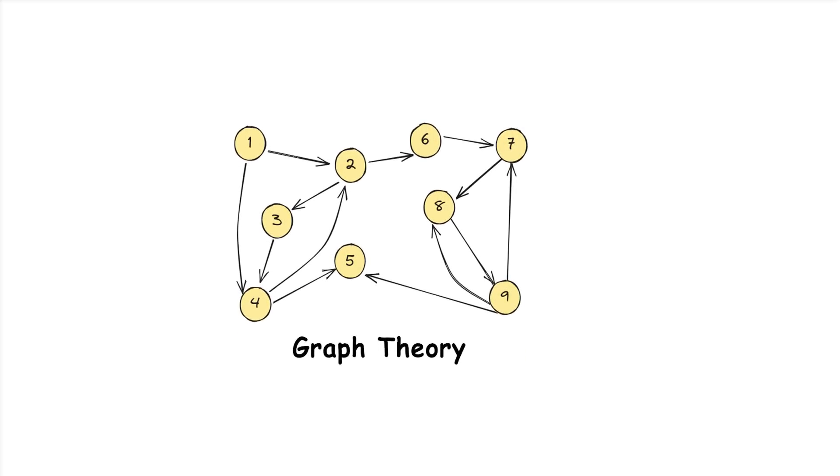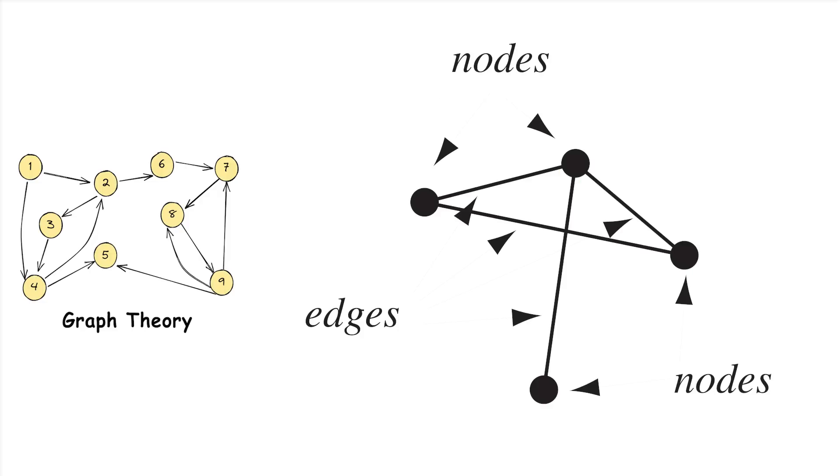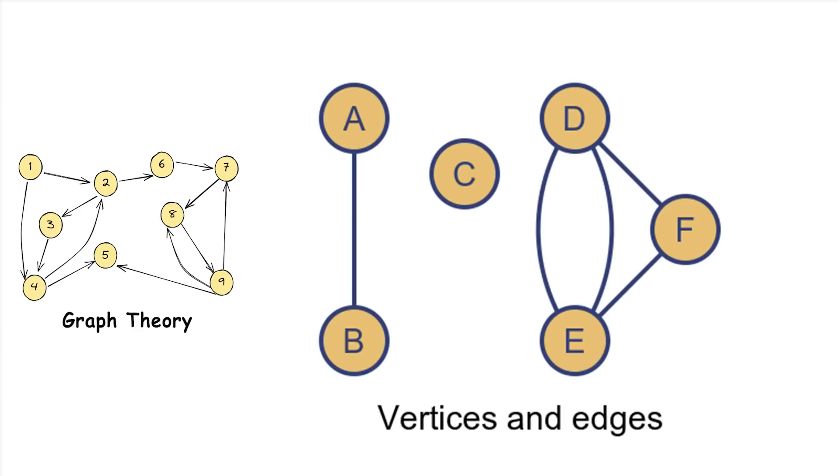Graph Theory. Graph Theory studies graphs, which are mathematical structures used to model pairwise relations between objects. A graph is made up of vertices connected by edges. Graph Theory helps solve problems related to networks, such as finding the shortest route in a map or designing efficient computer networks.